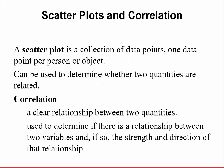A scatterplot is a collection of data points where one data point is per person or object. This can be used to determine whether two quantitative variables are related. The table of data is going to have two variables, and we're going to plot them so you only see a single point for each pair. Correlation talks about when there's a clear relationship between two quantities. We use this to determine if there's a relationship between two variables, and if so, we talk about the strength and direction of that relationship.